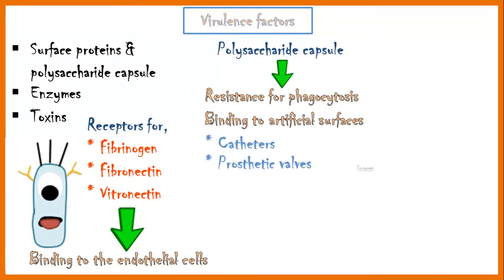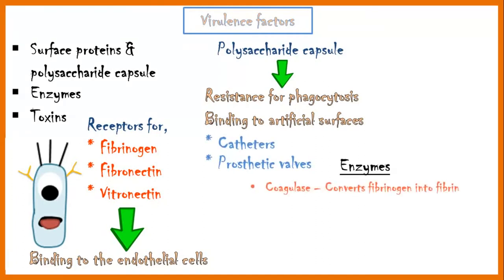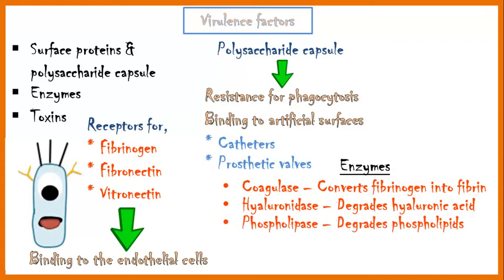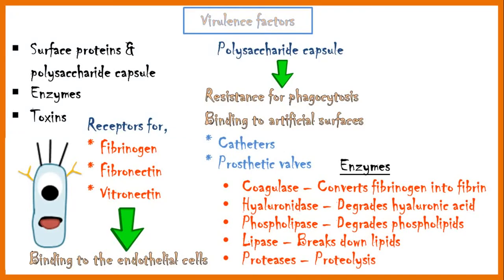Enzymes include coagulase, which converts fibrinogen into fibrin, causing blood clotting. Hyaluronidase, which degrades hyaluronic acid, a major component of the extracellular matrix. Phospholipases, which degrade phospholipids. Lipases, which degrade lipids. And proteases, which cause proteolysis.